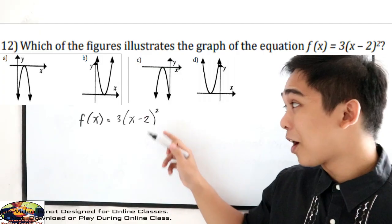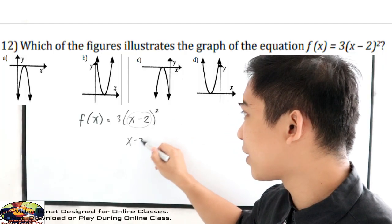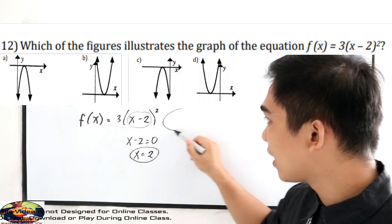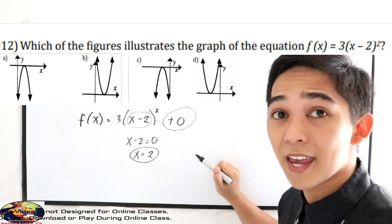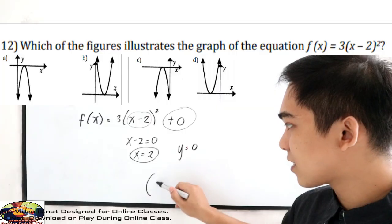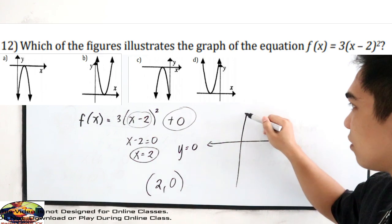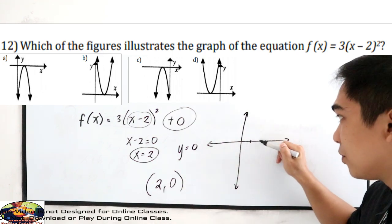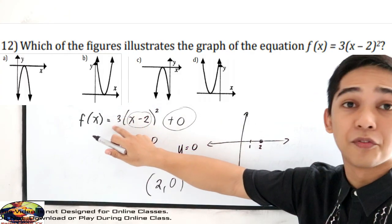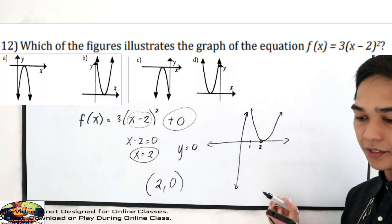Let us find the vertex of our parabola. To find the vertex, equate x minus 2 to 0, so x is equal to positive 2. For y, since there is no added constant, that is understood as plus 0, so y is 0. Therefore the vertex coordinates are (2, 0). Since the coefficient A is positive, our graph opens upward. So the answer for number 12 is letter B.